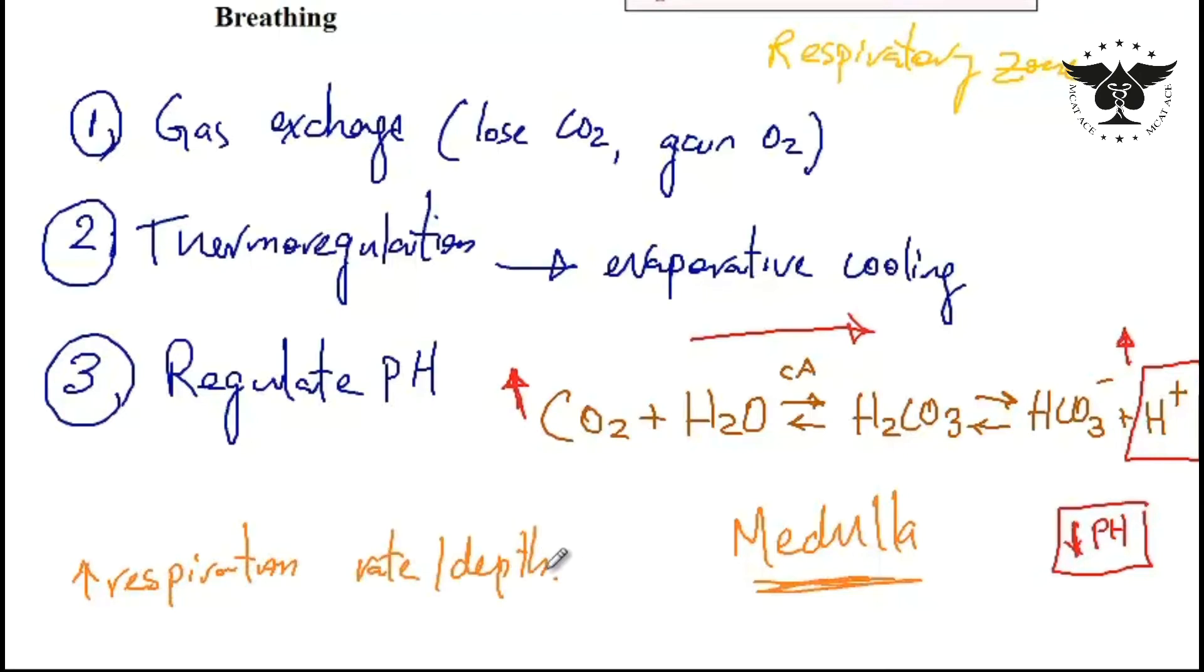Once there is an increase in respiration rate there would be a drop in CO2 concentration of the blood. As a consequence the equation shifts to the left side. Once it shifts to the left, the H+ concentration will drop and therefore pH will be increased until it's normalized.